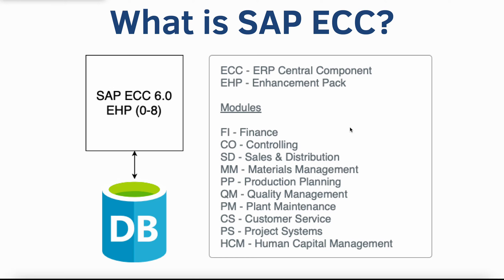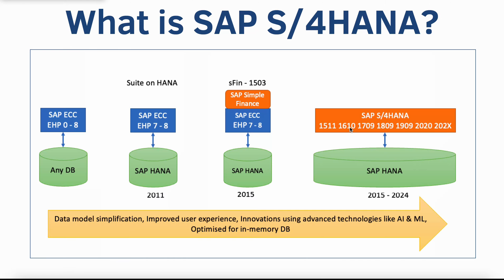Now you might ask, if ECC is SAP's main ERP system, then what is S4HANA? S4HANA is trying to dethrone ECC as SAP's main ERP product. It is the next-generation ERP software that runs on an in-memory database called SAP HANA. It offers real-time analytics, advanced functionalities, simplifies data structure, and provides improved user experience. I have made detailed videos about both ECC and S4HANA in my channel, with links provided in the description below.